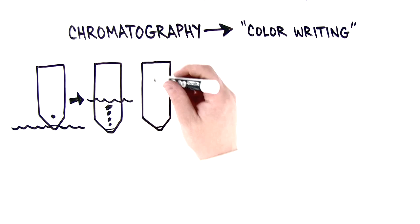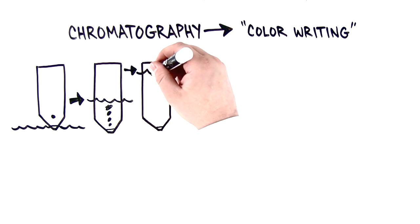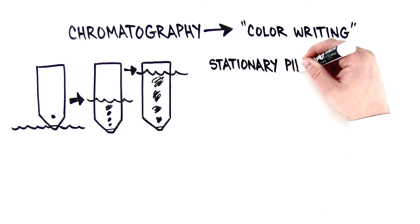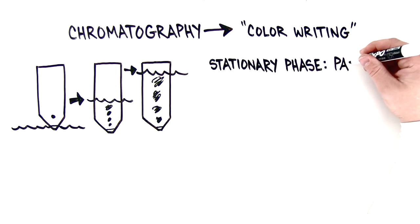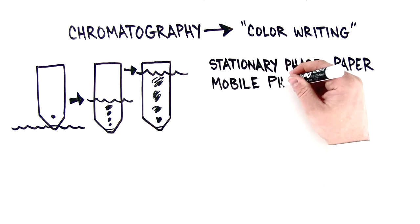Chromatographic separation of mixtures requires that the components be able to exist in two phases, a stationary phase and a mobile phase. In this example the stationary phase is the paper and the mobile phase is the water.